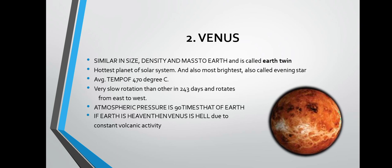Venus is the hottest and brightest planet, also called the evening star. It is also called Earth's twin because its size, density, and mass are comparably the same as Earth's. Its average temperature is 470 degrees centigrade, it rotates very slowly from east to west, and its atmospheric pressure is 90 times higher than that of Earth.